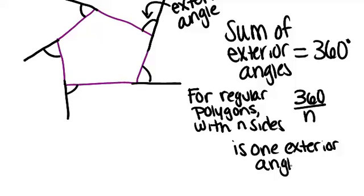Because again, if all the angles add up to 360 and you want to figure out just one, and there are n of those same angles, you can divide 360 by n.